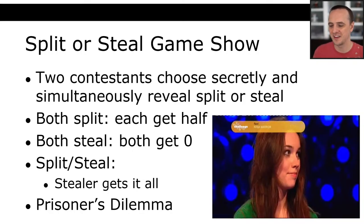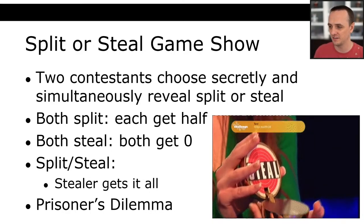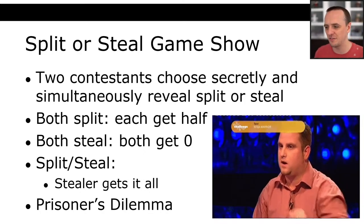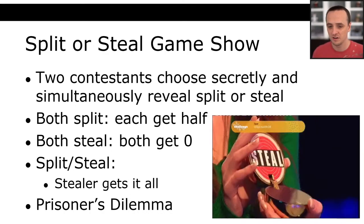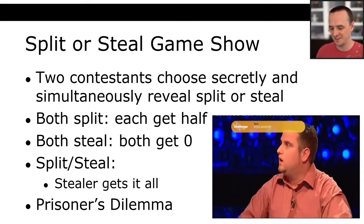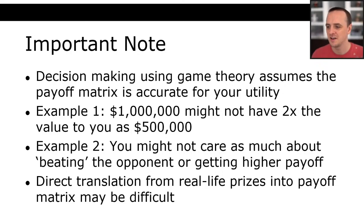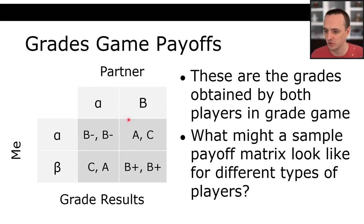For the grades game, the set of all strategies for both players is alpha and beta. A particular strategy is what you've chosen from that set. If the caring player chose alpha and the greedy player chose beta, then s_i for caring is alpha, s_j for greedy is beta, and S (the full strategy profile) maps each player to their choice. The utility values are the payoff numbers associated with each player's outcome given the strategy profile.